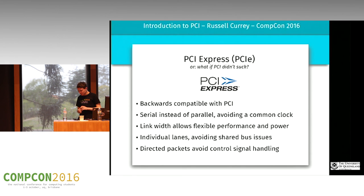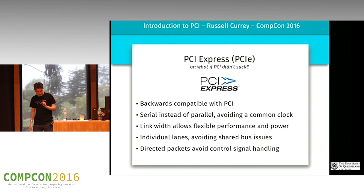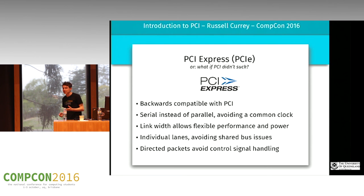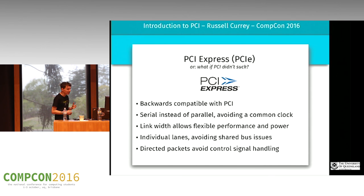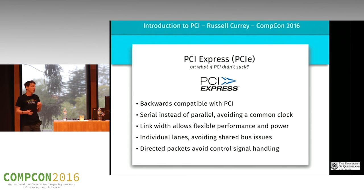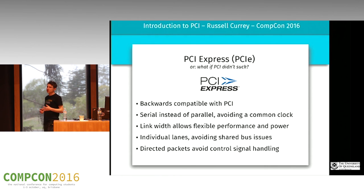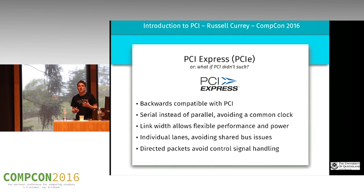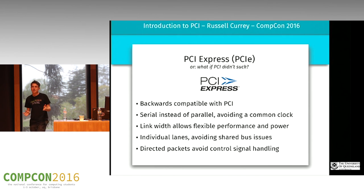PCI Express has flexible lane width. I showed you the slots on the motherboard — a 1x and a 16x width slot. For something that's really high performance like a graphics card, you can give it all the power you can and it'll use it all. But for something that doesn't need much performance — maybe a Wi-Fi card — it can go in a 1x or 2x slot, which uses far less power and the materials are cheaper to make. This flexibility really allowed PCI Express to take off because it made it suitable for a wide variety of peripherals.